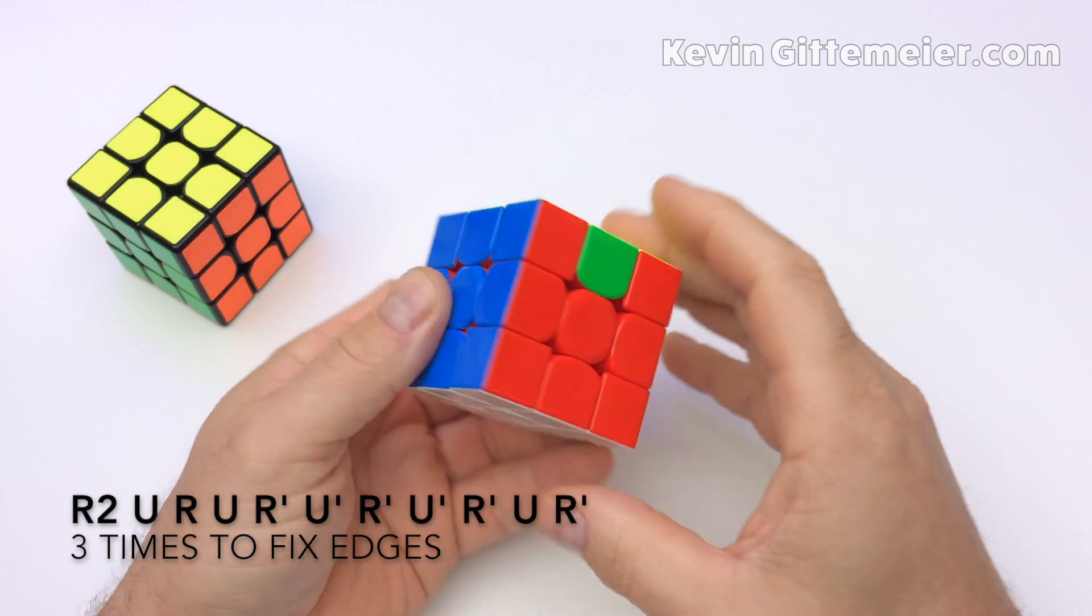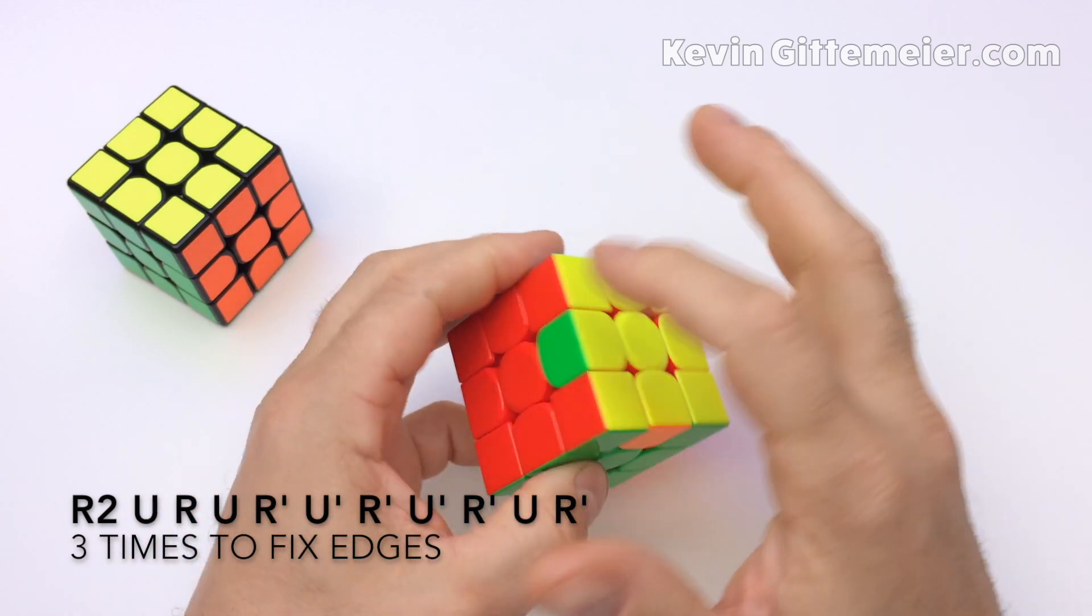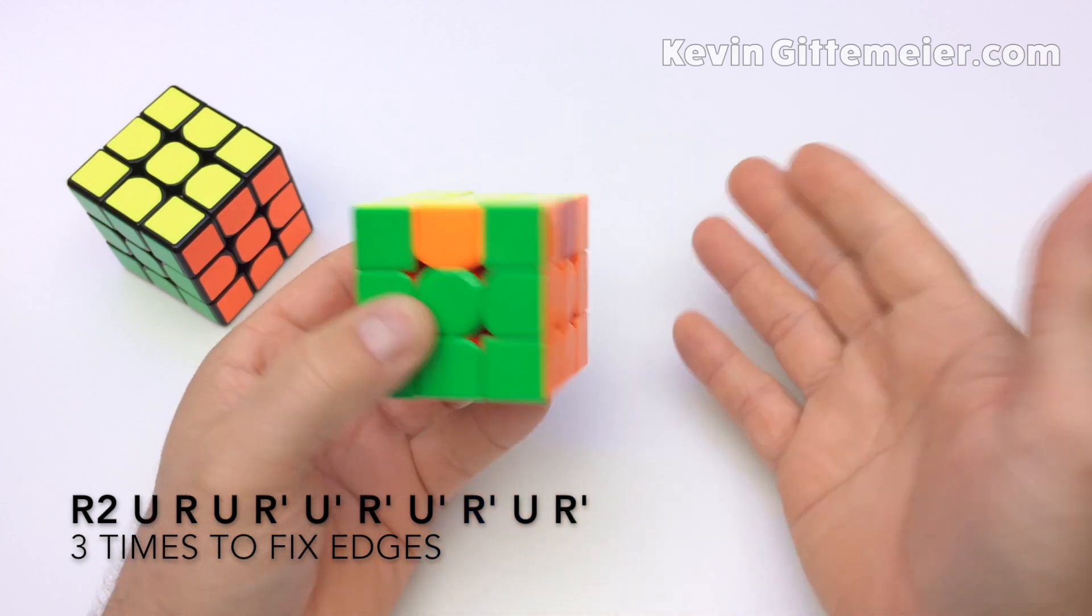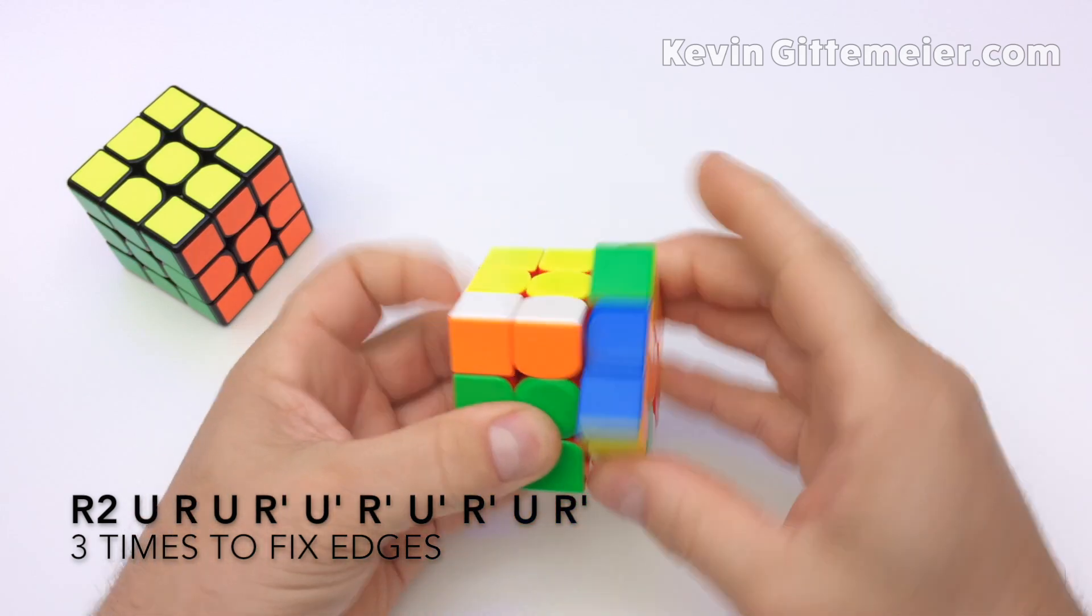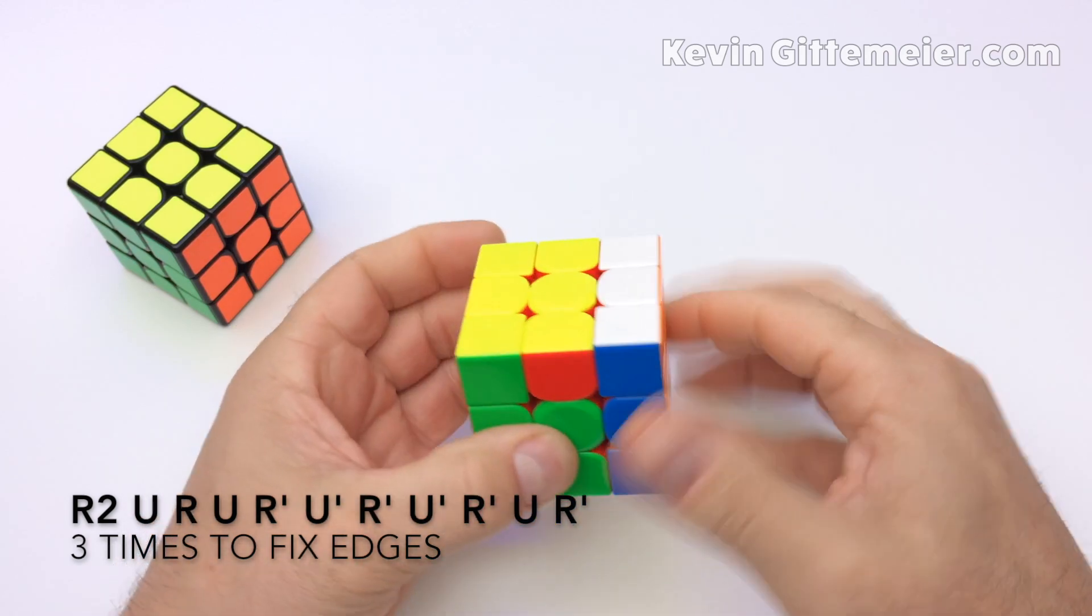And at this point, we have a solved side. Then we put it to the back. We'd see, does this go here? No, so in this case, we'll have to do it two more times for a total of three.